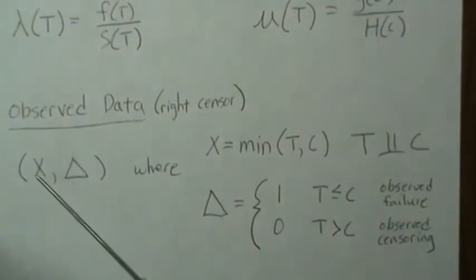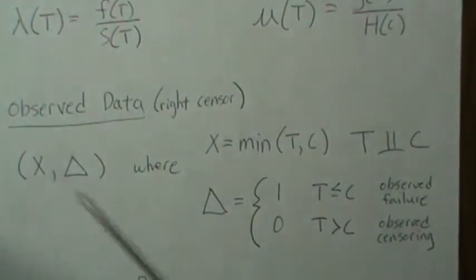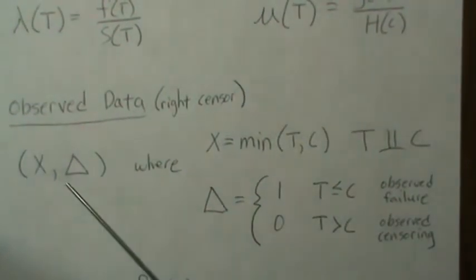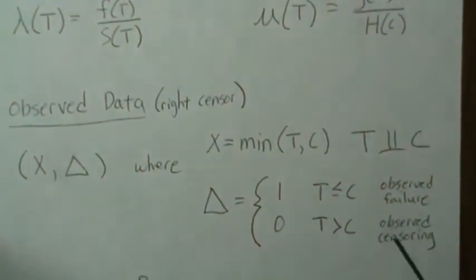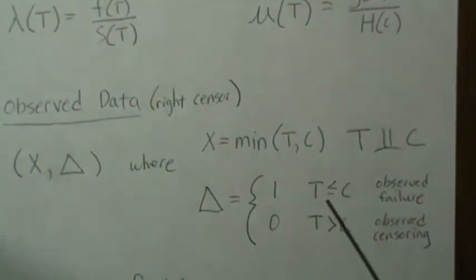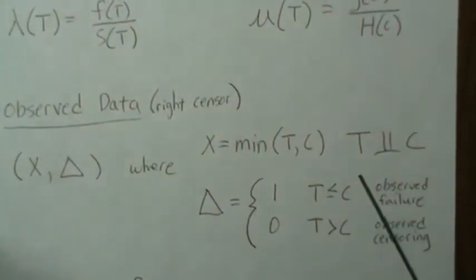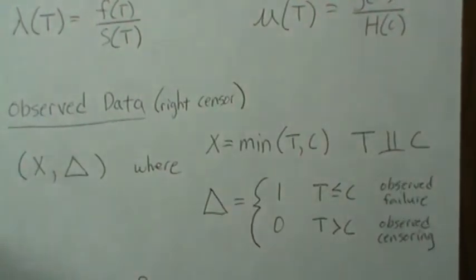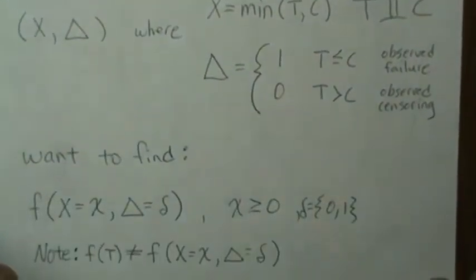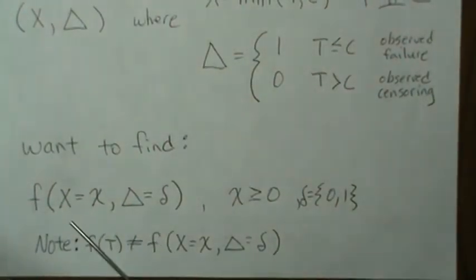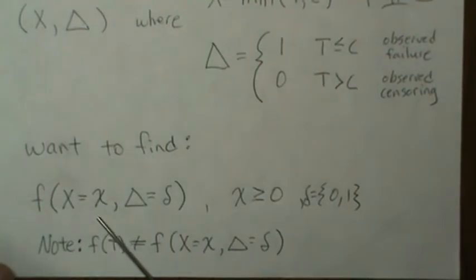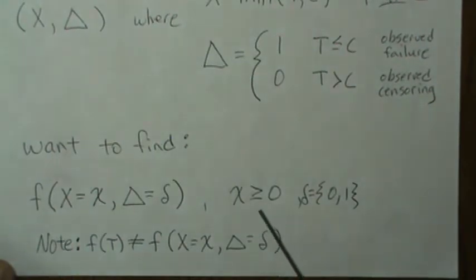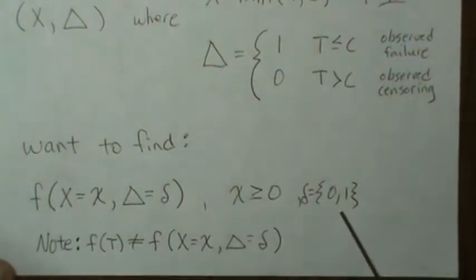And sort of the normal thing here, we observe a pair of observations. X is the minimum of the failure time or the censoring time. And delta is a 1 or 0. We're going to let it be 1 if the failure time is observed and a 0 if it's censored, as we defined. And this piece — that the failure times and the censoring times are independent — is very important.